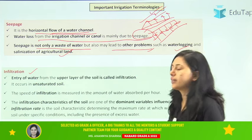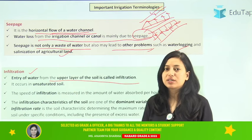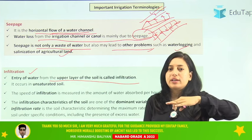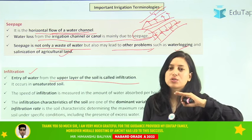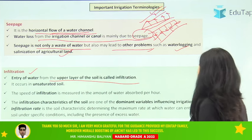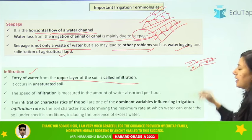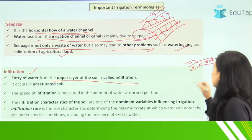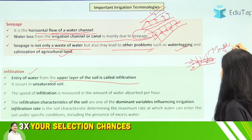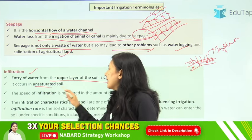The next term is infiltration — basically it is the entry of water into the upper layer of the soil. Whenever we are applying irrigation, when the water is entering into the soil, that is infiltration. Water infiltrating the soil is called infiltration. Just remember: entry of water into the soil is called infiltration. It occurs in unsaturated soil.